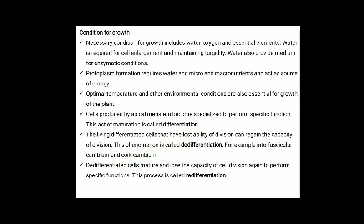Necessary conditions for growth include water, oxygen, and essential elements. Water is required for cell enlargement and maintaining turgidity; it also provides a medium for enzymatic reactions, and protoplasm formation requires water and micro- and macronutrients. Optimal temperature and other environmental conditions are also essential. Cells produced by apical meristem become specialized to perform specific functions — this act of maturation is called differentiation. Living differentiated cells that have lost the ability to divide but regain the capacity of division exhibit a phenomenon known as de-differentiation. De-differentiated cells that mature and lose the capacity of division again to perform specific functions undergo re-differentiation.